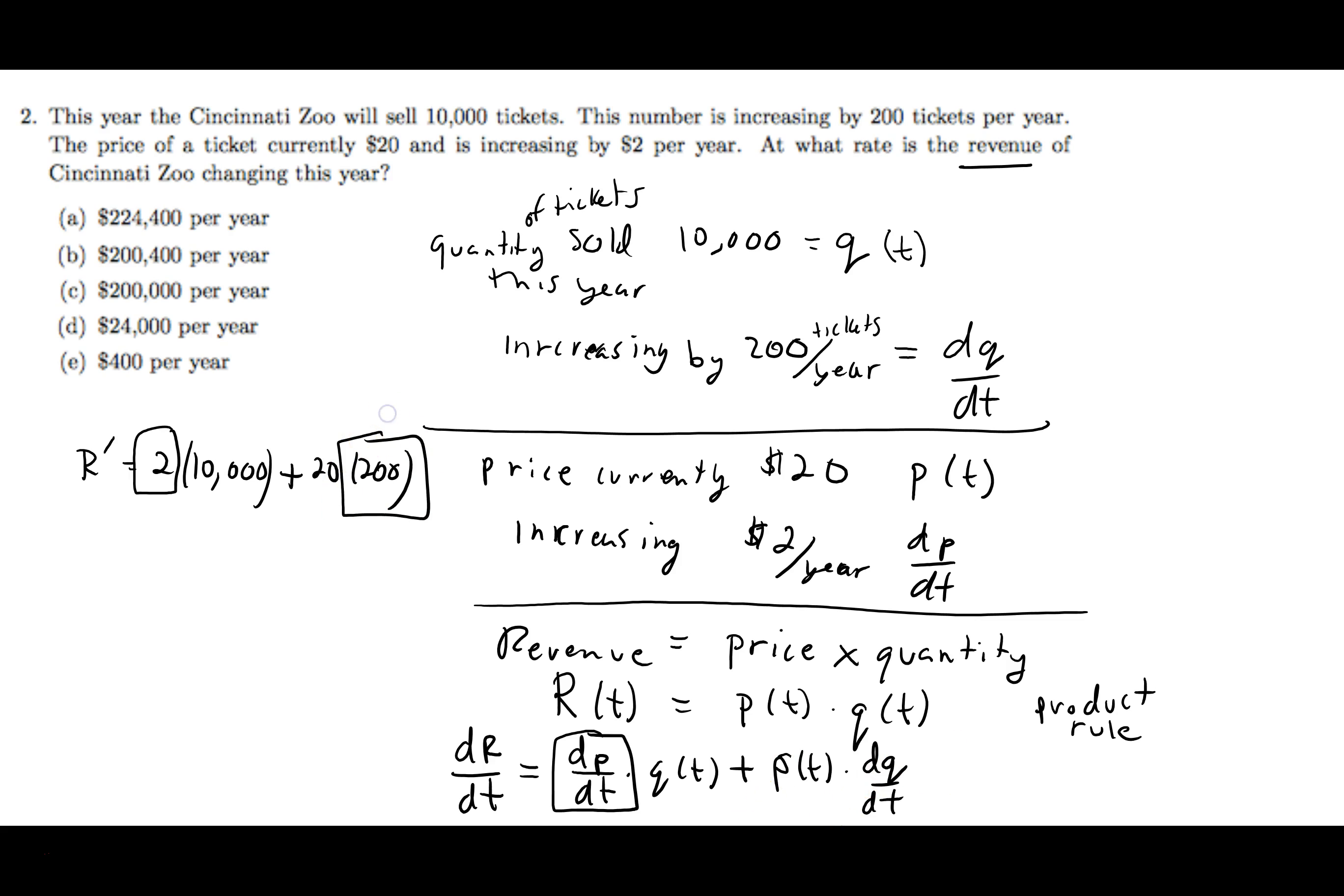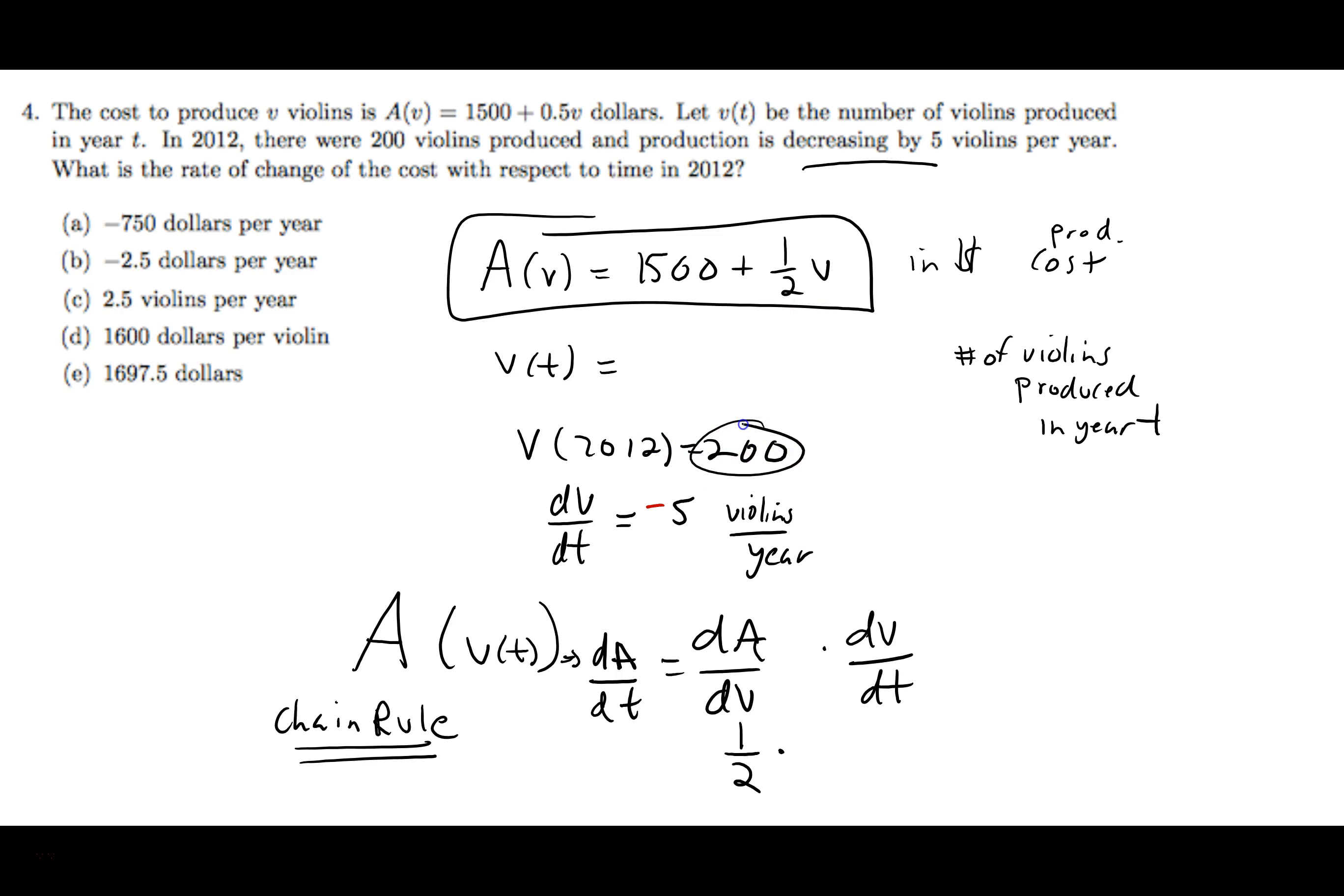So we take the derivative of A with respect to V. Here's A with respect to V, its derivative. The 1500 derivative is 0. The half V derivative is 1 half. We have what dV/dt is. It's negative 5 in the year 2012. If there was a, this 200, it looks like you didn't use it. If there was a V in the derivative, we would plug that into there. But dA/dV, there's no V there. It's a constant. So that's why it looks like we're not using this number 200. But that's okay. dV/dt is negative 5. And so dA/dt is negative 5 halves and negative 2.5 violins per year.